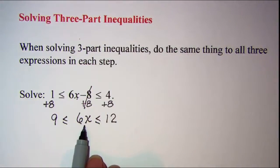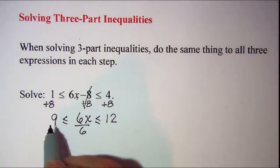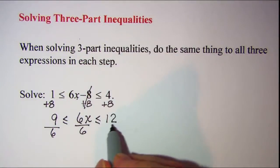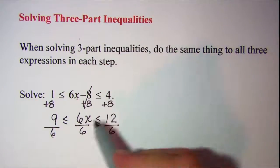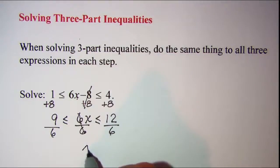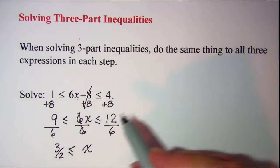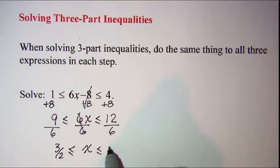One more step to isolate x. Since six is multiplied by x, I'm going to divide all three parts by six. This will cancel, and I now have x in the middle. Nine over six simplifies to three halves, and twelve over six simplifies to two.